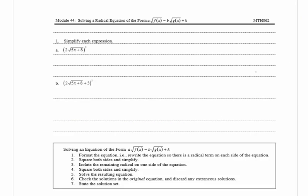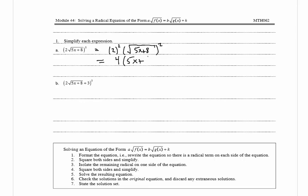In number one it wants us to simplify each expression. In part a we have 2 times the square root of 5x plus 8, all squared. That equals 2 squared times the square root of 5x plus 8 squared, which is 4 times 5x plus 8. Multiplying 4 through the parentheses we get 20x plus 32.